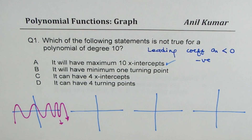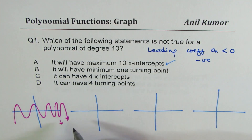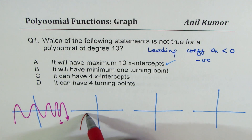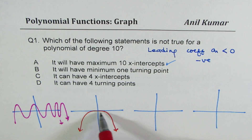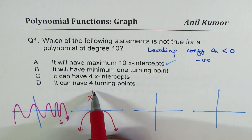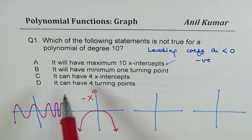It will have minimum 1 turning point. Since the graph of the function has to go with both ends facing the same side — we are taking leading coefficient negative — it goes from one side and curves back, giving at least 1 turning point. So minimum 1 turning point is correct.